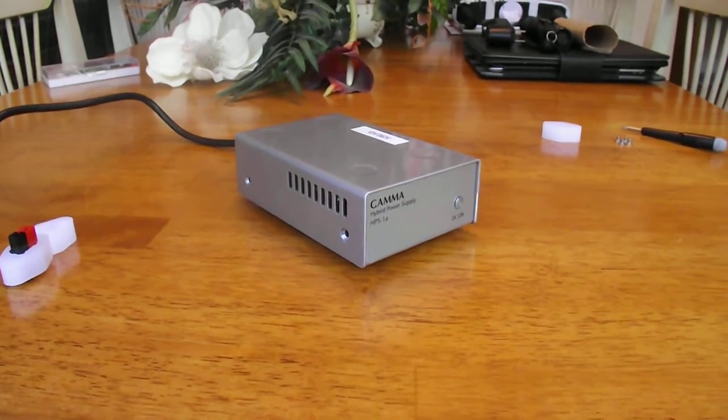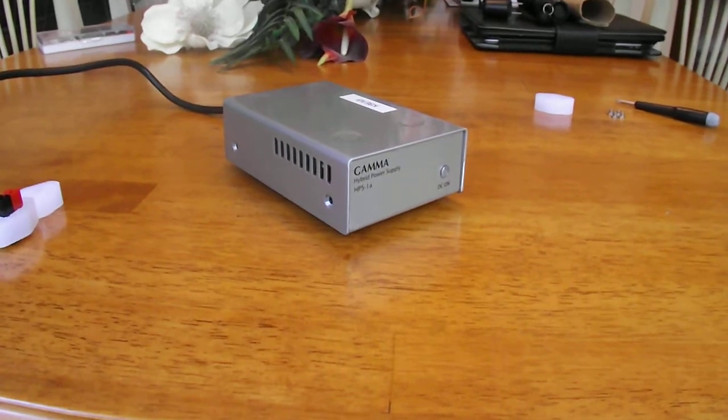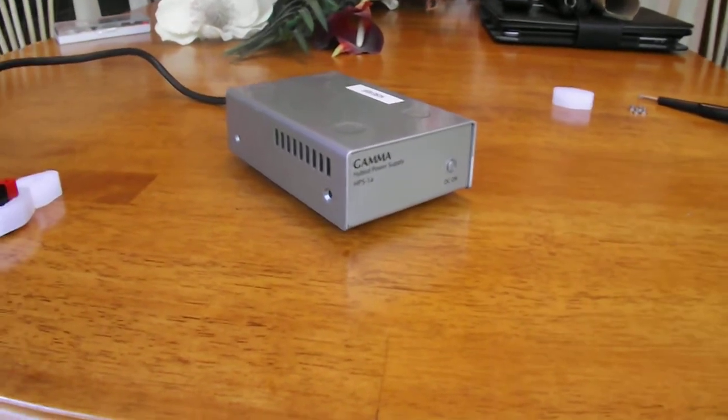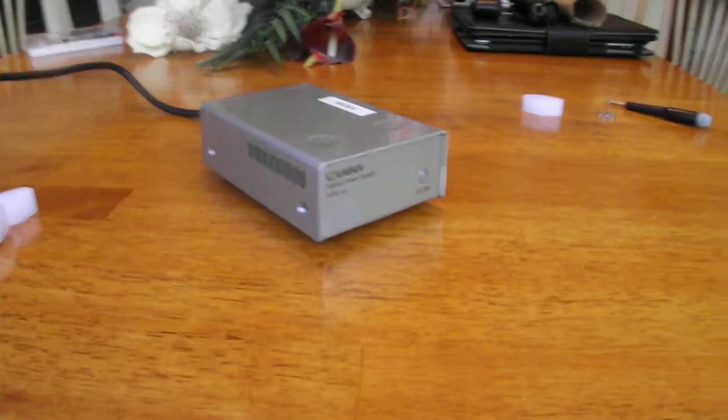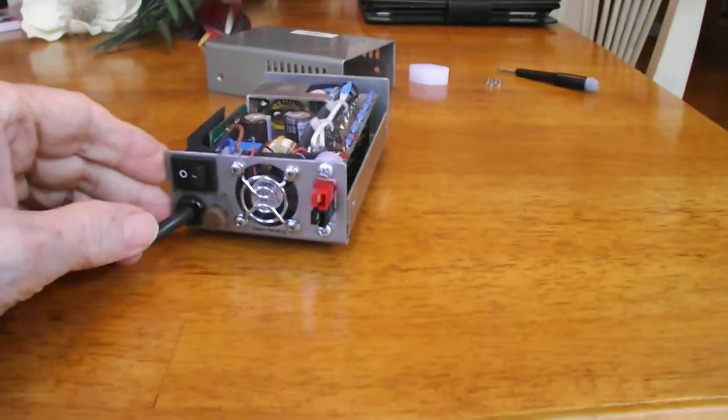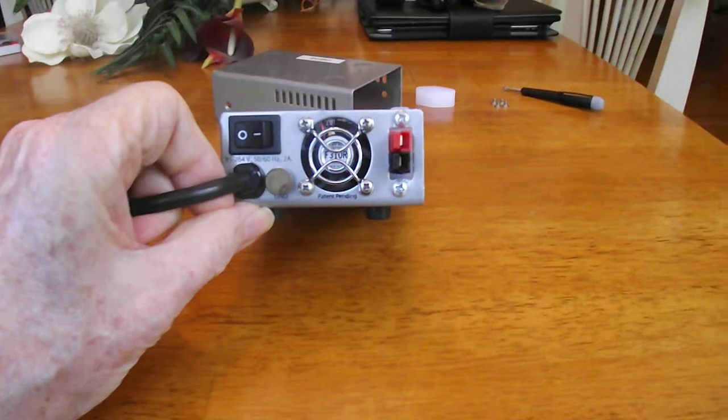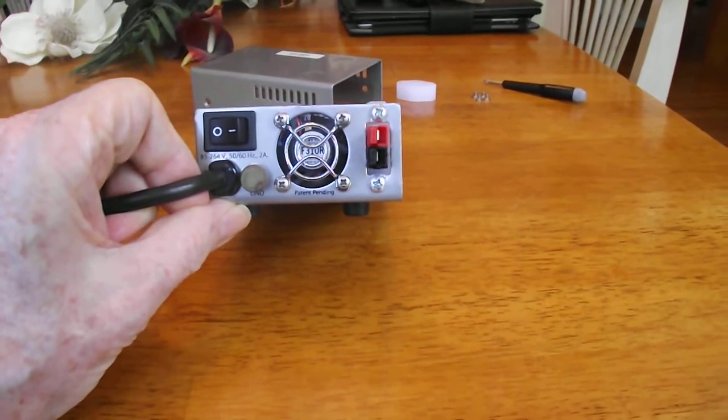This video shows how I modified my Gamma Research HPS 1A supercapacitive power supply. The modification was to replace the Molex connector that the manufacturer has been using ever since they released this product and replace it with an Anderson power pole.